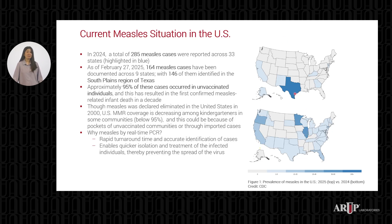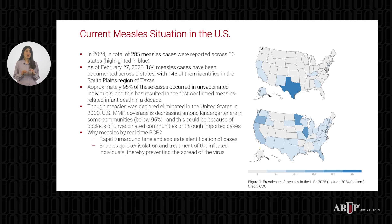So far into 2025, 164 cases have been documented across nine different states, with 146 of them being identified in the South Plains region of Texas. The majority of these cases occurred in unvaccinated individuals. Tragically, this has resulted in the first confirmed measles-related infant death in a decade. Misinformation and distrust of vaccines can be just as contagious as the disease itself. Due to declining vaccination rates in certain communities and through imported cases, measles outbreaks continue to pose a threat to public health.